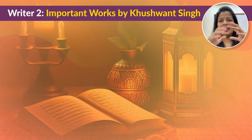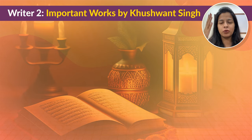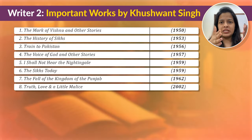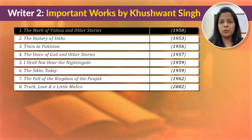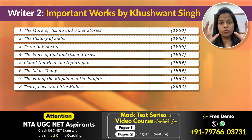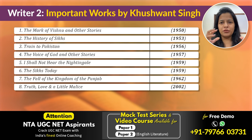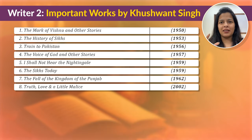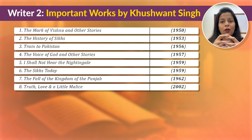Now let us look at some very important works written by Khushwant Singh. I'm going to give you a chronological list on screen. It starts with Mark of Vishnu and Other Stories, and the last work is Truth, Love and a Little Malice. These are the works whose names you should know. To remember the entire chronological list, there is a helpful mnemonic coming up next.